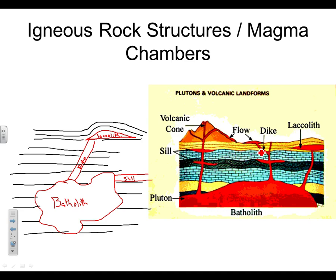The dike is cutting through the rock layers. The batholith is really big and melts its way through the rock layers. The laccolith just bends the layers — it's not quite as hot. These are all feeding the volcanoes, and they're full of magma. But if they cool, that magma turns to rock, and then we call them an igneous rock structure.